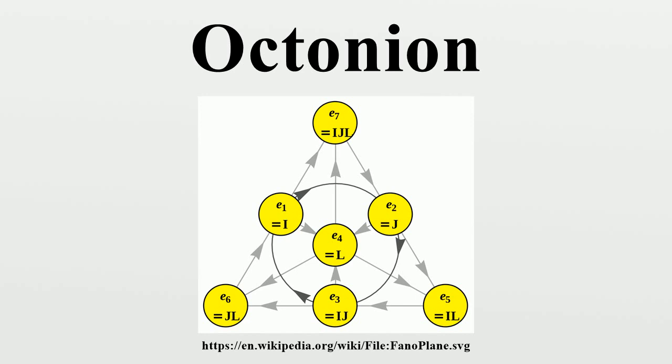Automorphisms: An automorphism A of the octonions is an invertible linear transformation of O which satisfies. The set of all automorphisms of O forms a group called G2. The group G2 is a simply connected, compact, real Lie group of dimension 14. This group is the smallest of the exceptional Lie groups and is isomorphic to the subgroup of Spin 7 that preserves any chosen particular vector in its eight-dimensional real spinor representation. The group Spin 7 is in turn a subgroup of the group of isotopies described below.